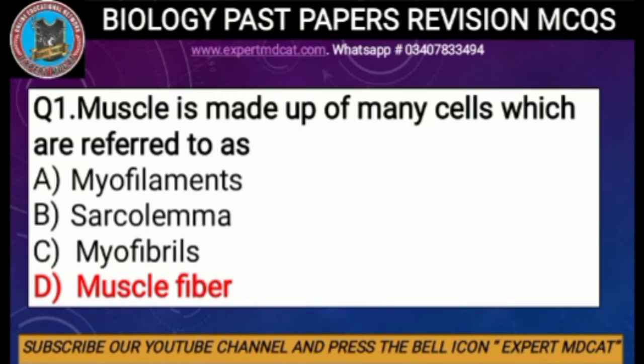The correct option is D, muscle fiber. Muscle is made up of many cells which are referred to as muscle fiber, also called muscle cells. There are three types of muscle cells or muscle fibers in humans: skeletal muscle fibers, cardiac muscles, and smooth muscles.